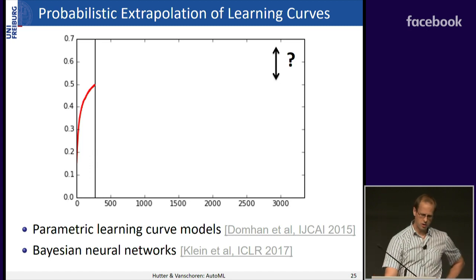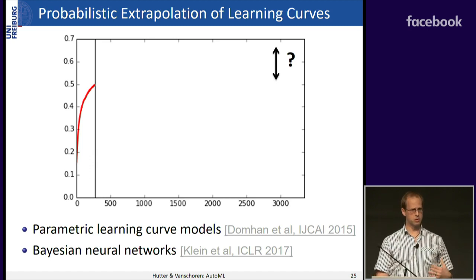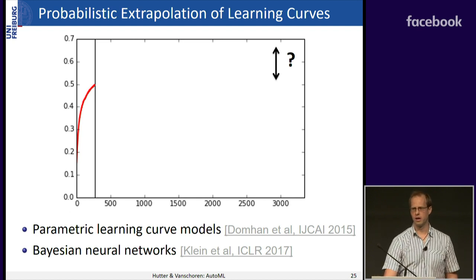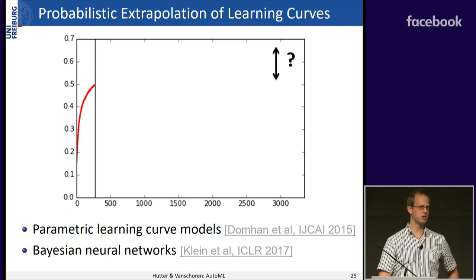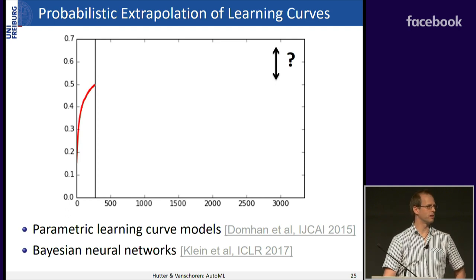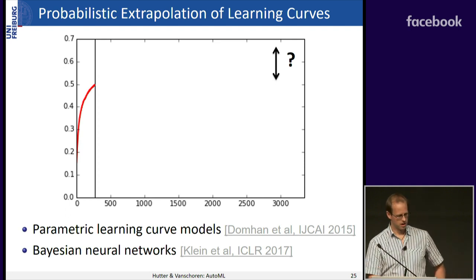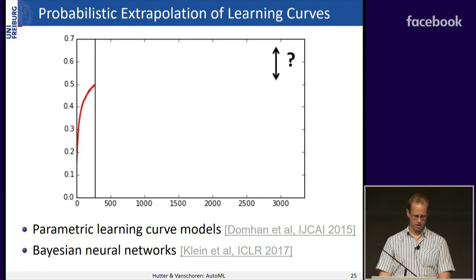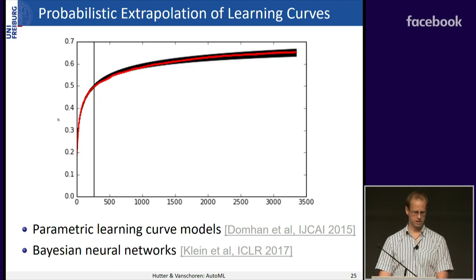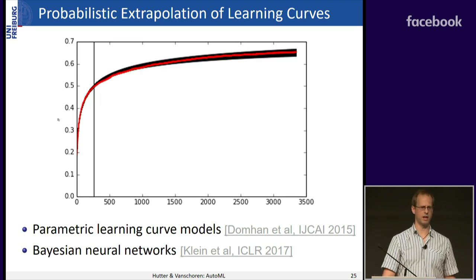The second approach beyond black-box optimization is probabilistic extrapolation of learning curves for early stopping. You have an initial learning curve and want to know where it's going — will it do well or not? You can use parametric learning curve models fit with MCMC, or Bayesian neural networks, to do these extrapolations and predict whether to continue training.